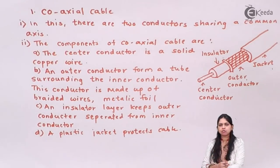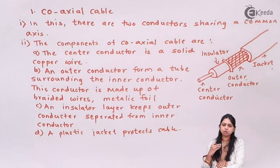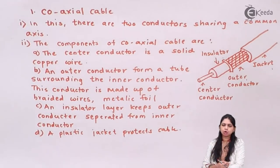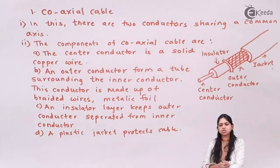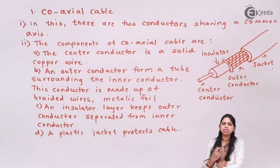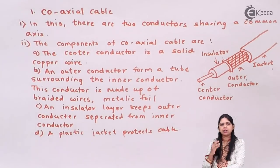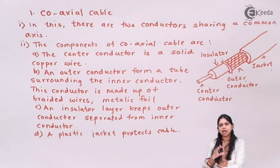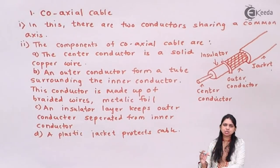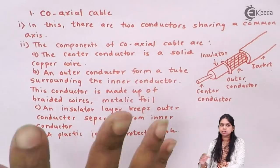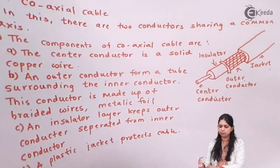For an ideal wire, the cost of media should be less, bandwidth should be more, installation requirement should not be very high, attenuation should be less, and EMI should also be less. These are the characteristics of an ideal wire. Now let us see the characteristics of coaxial cable.